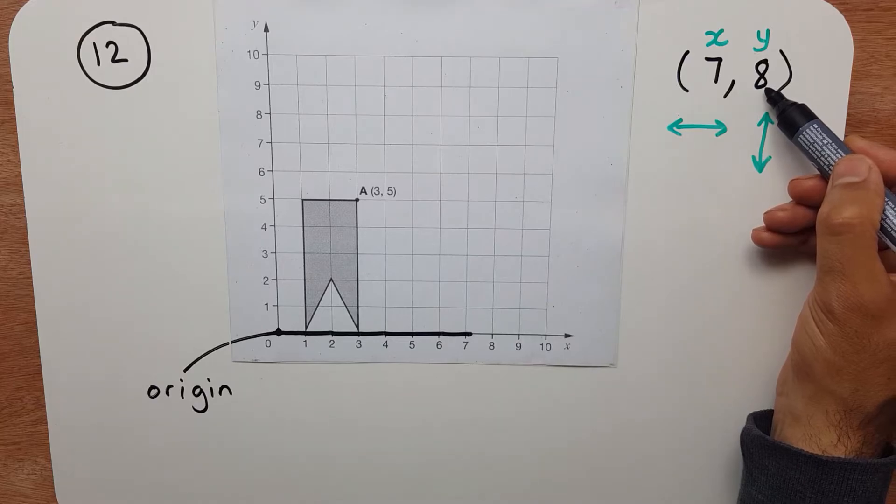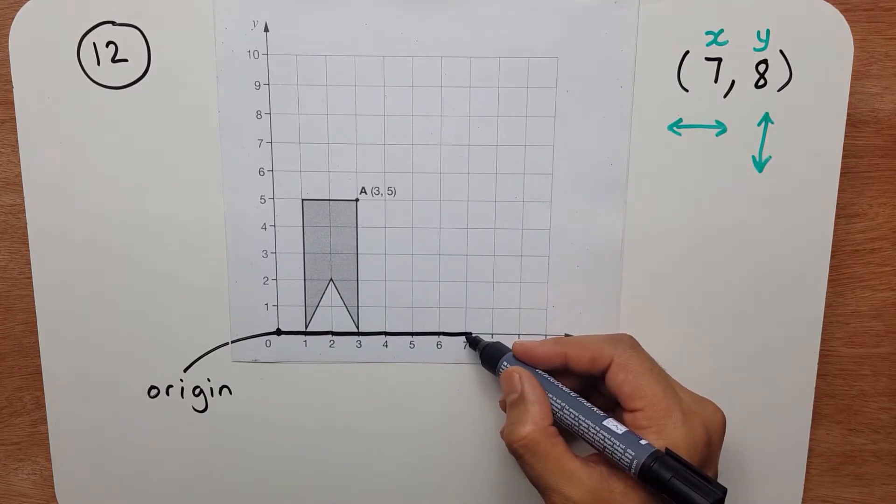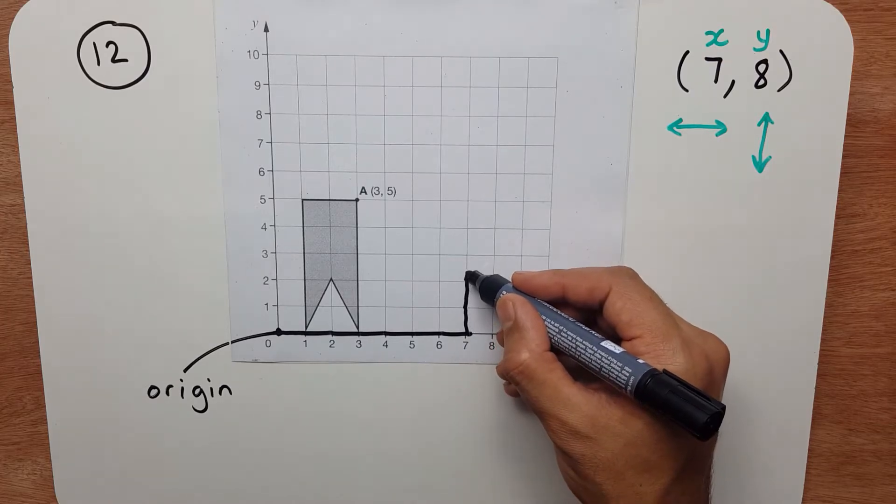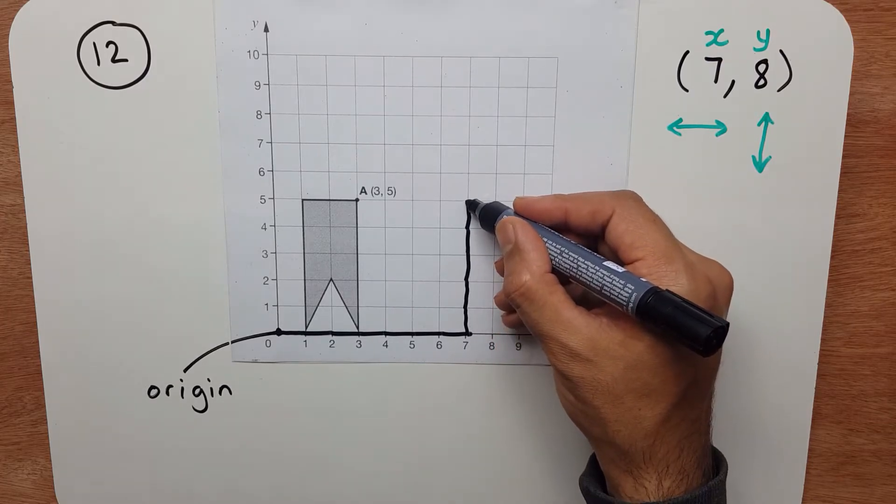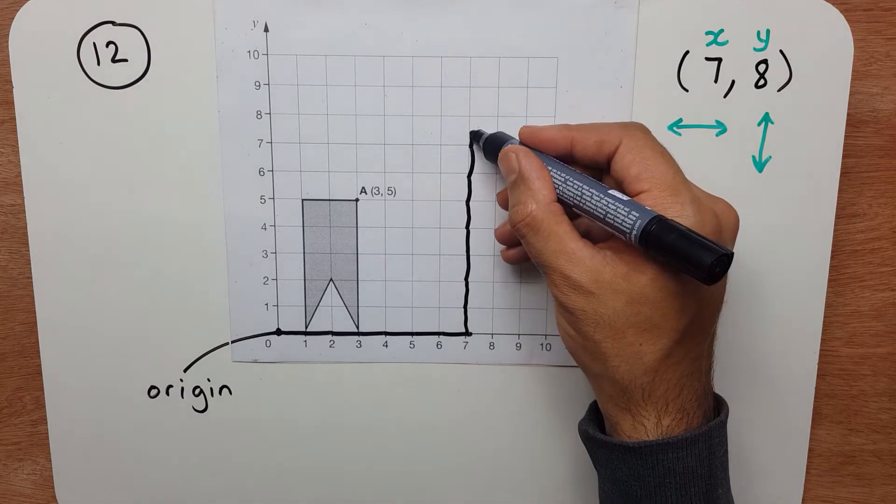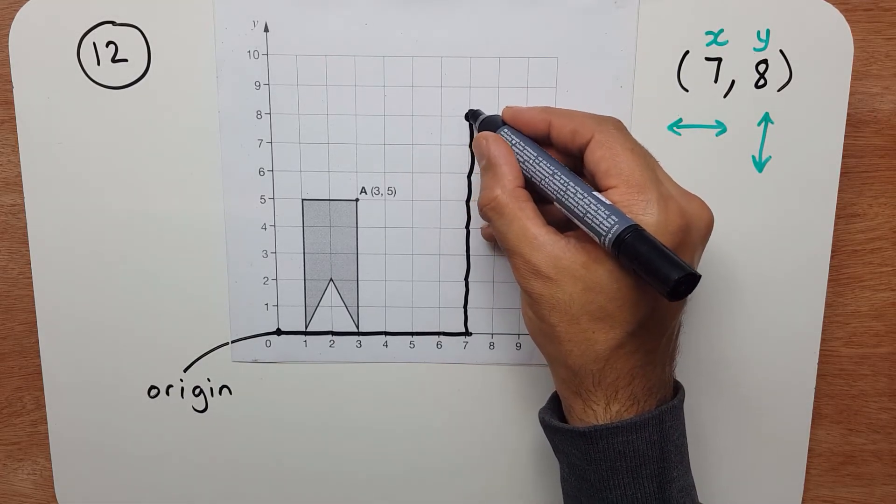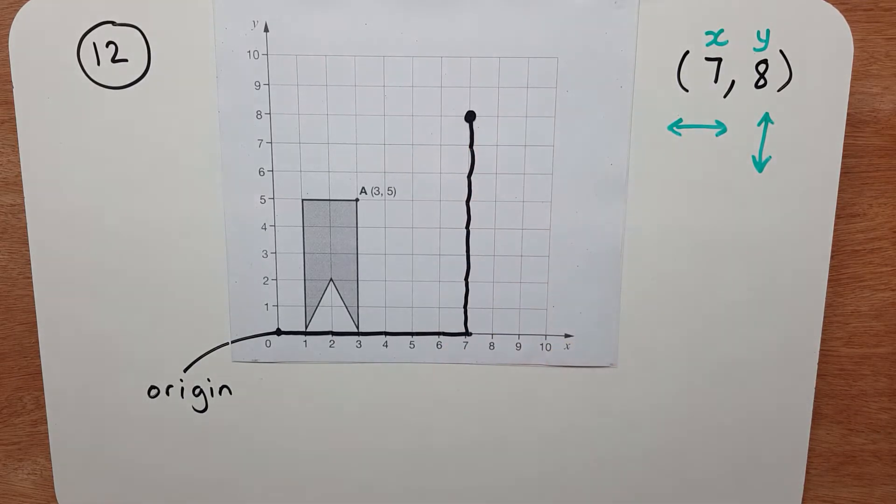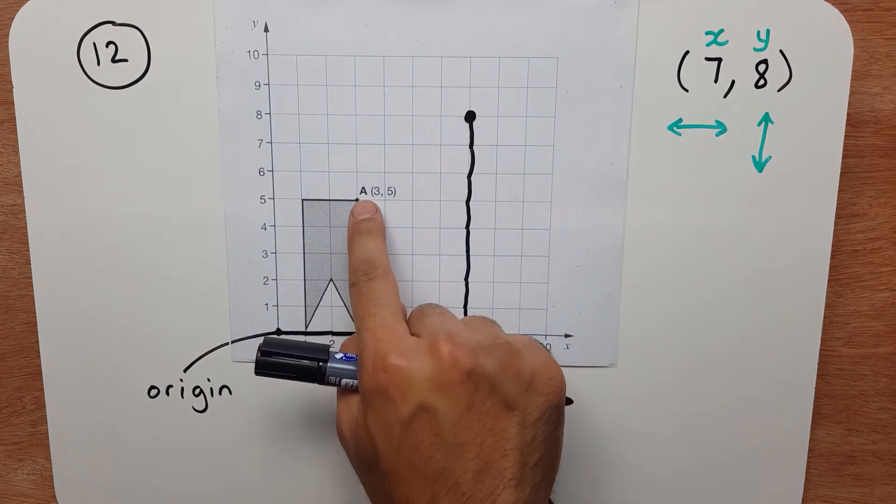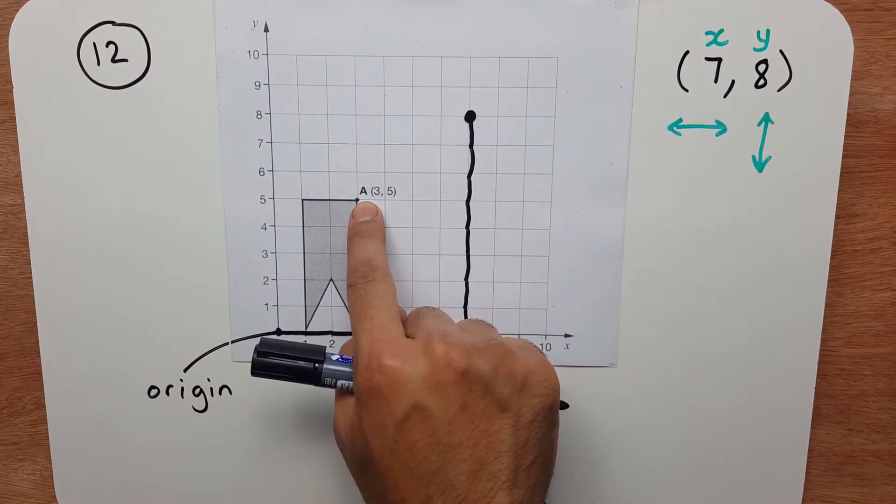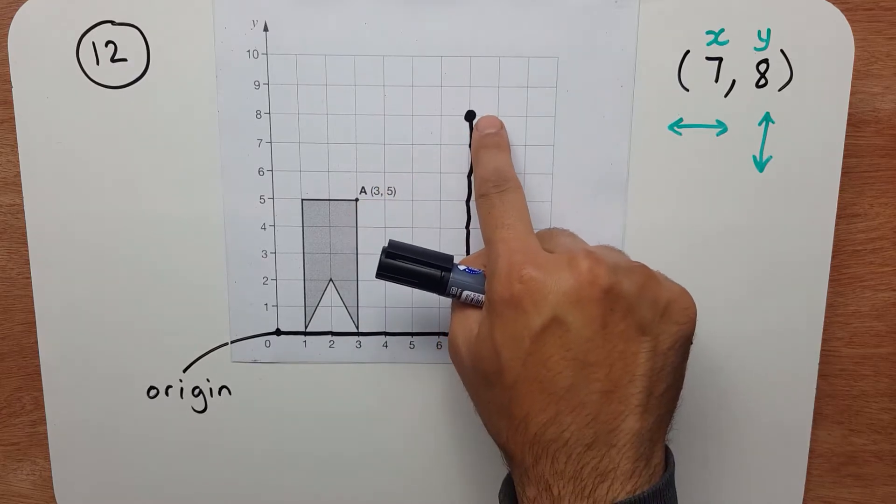Now I need to travel 8 in the y-direction from here. 1, 2, 3, 4, 5, 6, 7, 8 there. So they've said that this point has moved to there.